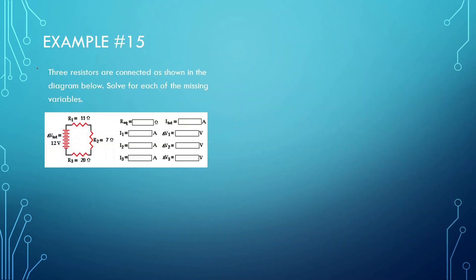Alright, let's look at this next problem. Three resistors are connected as shown in the diagram — solve for each of the missing variables. The total voltage is 12 volts. Since this is just one closed circuit, all of the current is going to be the same throughout. Let's first find what the total resistance is — we add 11 plus 7 plus 20, since they're all in series, which gives us 38 ohms.